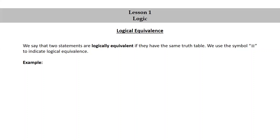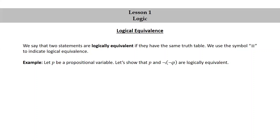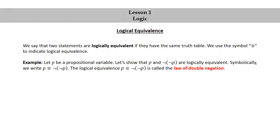Let's look at an example. Let p be a propositional variable. Let's show that p and not not p are logically equivalent. Symbolically, we write p is logically equivalent to not not p. The logical equivalence of p and not not p is called the law of double negation.